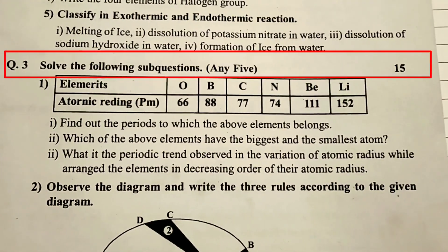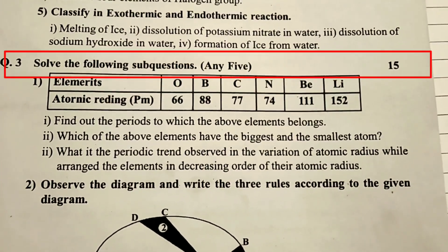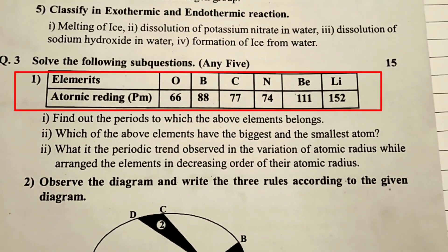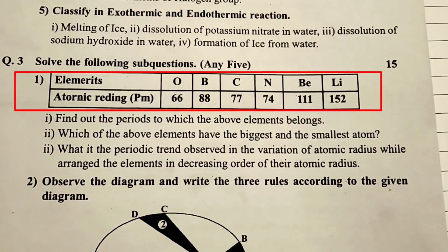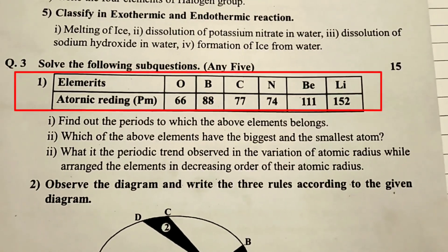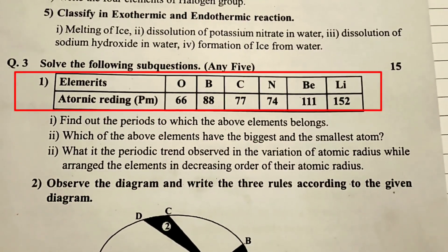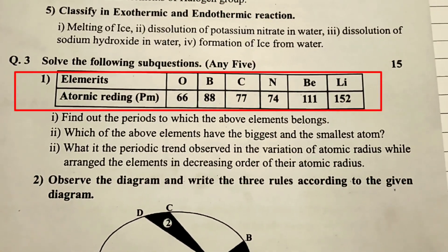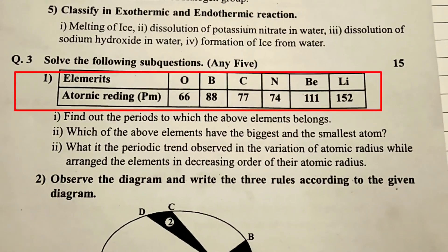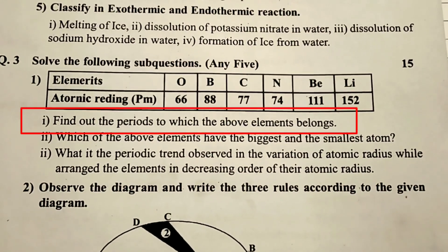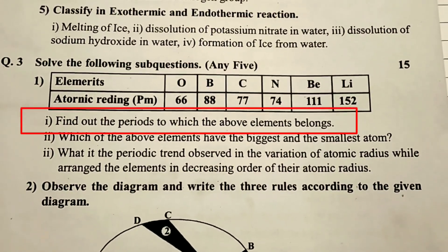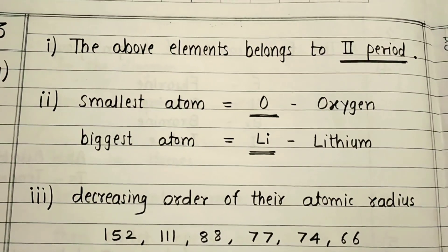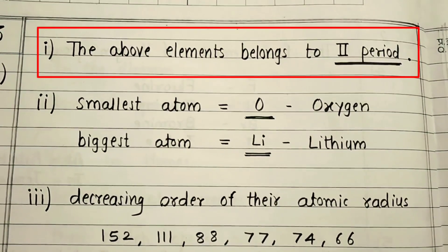Question 3. Solve the following sub-questions. Any 5, 15 marks. First question: Elements O, B, C, N, Be, Li with Atomic Radius 66, 88, 77, 74, 111, 152. Find out the periods to which the above elements belongs. The above elements belongs to second period.